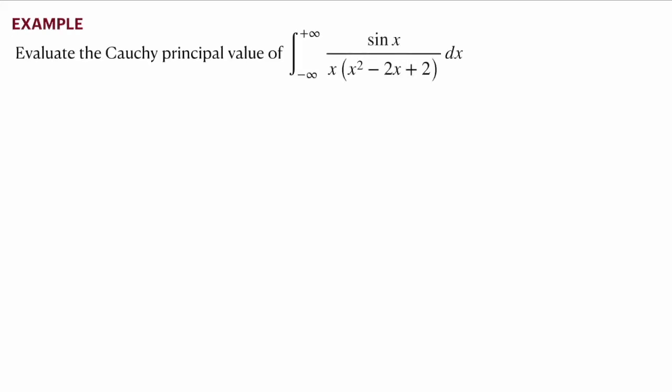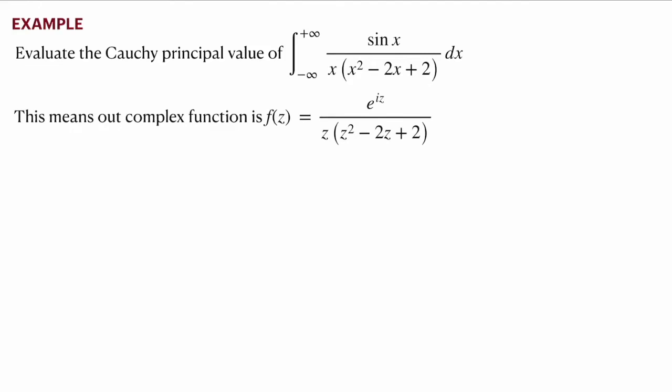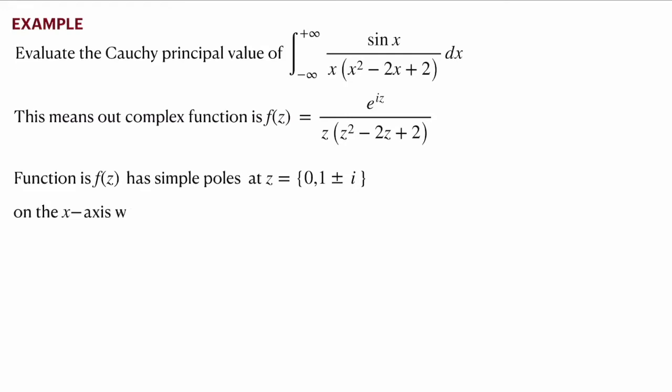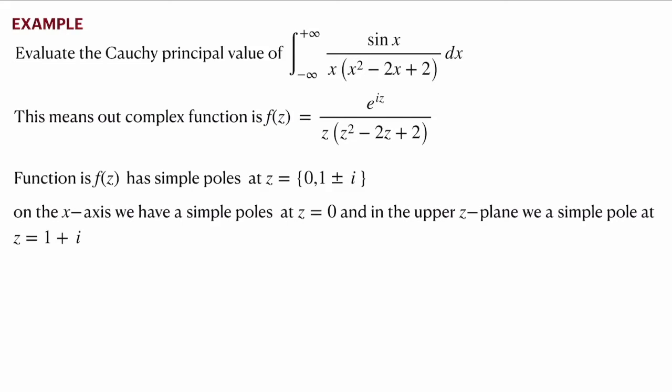We evaluate the Cauchy principal value integral from minus infinity to plus infinity of sin(x)/[x(x² − 2x + 2)] dx. The complex function we study is f(z) = e^(iz)/[z(z² − 2z + 2)]. Here the parameter α = 1, coming from sin(αx). We see that f(z) has three simple poles at z = 0 and z = 1 ± i. Since there is one singular point on the real axis at z = 0, we will have to use the indented contour.